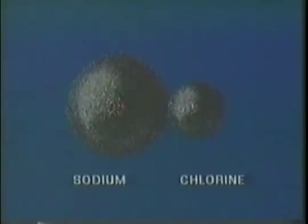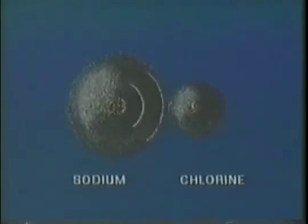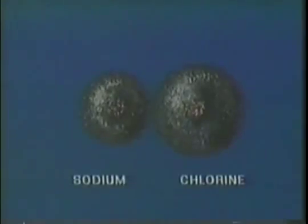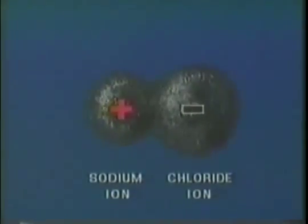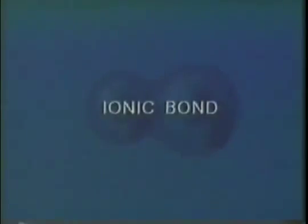Another type of bond forms when one atom with a strong attraction for electrons encounters another atom which has a very weak attraction for its outer electrons. This results in a transfer of at least one electron from one atom to the other. Both atoms become charged particles called ions, and it is the electrostatic attraction between them that bonds them together, forming what is called an ionic bond.